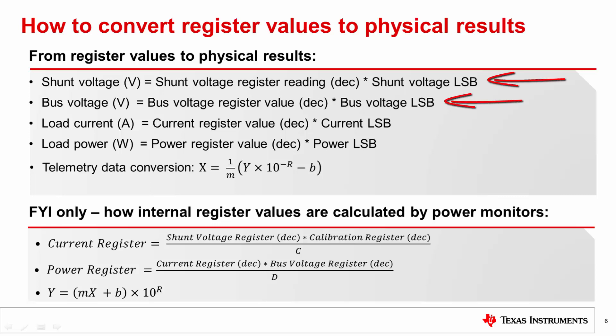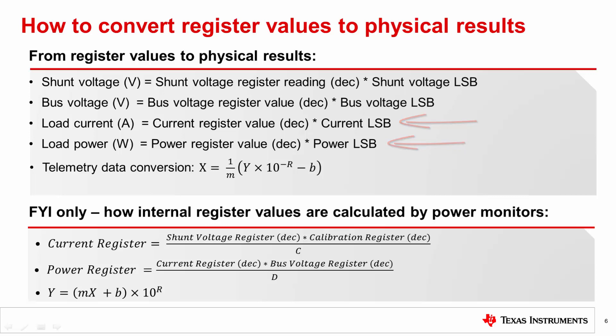Shunt and bus voltage registers have fixed LSBs. Once the registers are read, the adjusted decimal values of the readings multiplied by their LSBs will produce the real voltages measured. When reading from the current and power registers, use the computed current and power LSBs to get readings in amperes and watts, respectively. It should be noted that in some datasheets, such as the INA233, telemetry data conversion equations are provided alongside the coefficients M, B, and R for current, voltage, and power, respectively. These two formats are equivalent — either can be used, and they produce identical results.